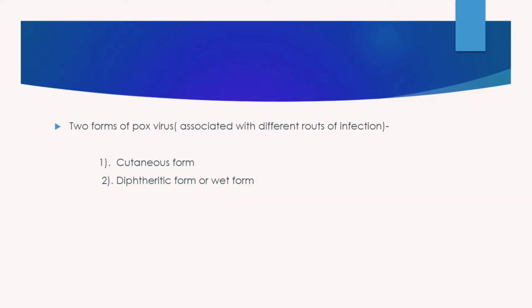There are two forms of fowl pox virus, classified based on the route of entry of the virus into the bird's body. The first form is the cutaneous form and the second is the diphtheritic form, also called the wet form.